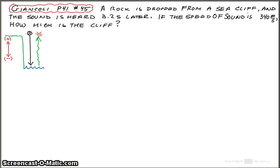The time for the rock to fall plus the time for the sound to travel back up is equal to 3.2 seconds. We can also say that the displacement of the rock is equal to the negative displacement of the sound — negative because the sound is traveling in the opposite direction of the rock. They travel the same distance, but kinematic formulas use displacement, not distance. So it's important to make that statement.